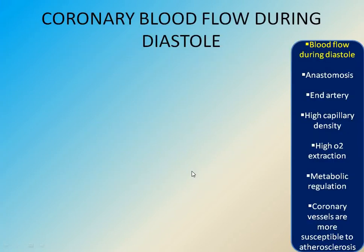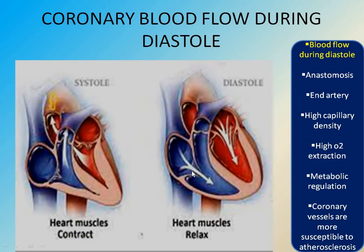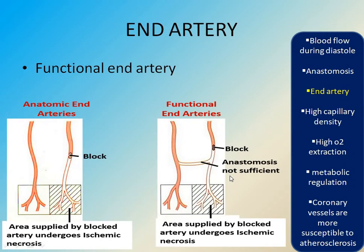Peculiarities of coronary circulation: coronary blood flow occurs during diastole — the coronary blood flow increases during diastole. Anatomical anastomosis means when blood supply from one artery is blocked, that area is supplied by another artery that anastomoses with it. End artery: an anatomical end artery means when there is a blockage in the blood vessel, that area undergoes necrosis because it is not supplied by another blood vessel. A functional end artery means the vessel anastomoses with another but that supply is insufficient.